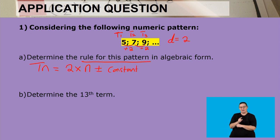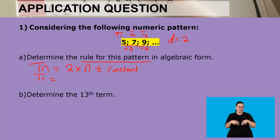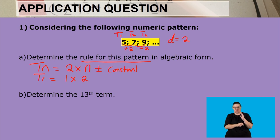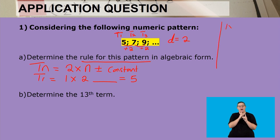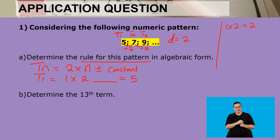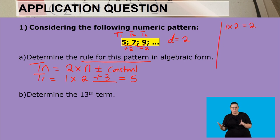Let's use the first term to find the rule. We say 1 multiplied by 2 — we use 1 because we are working with the first term, and 2 because that is our constant difference. We need to find what we add or subtract to get the first term, which is 5. Since 1 times 2 is 2, we need to add 3 to get from 2 to 5.